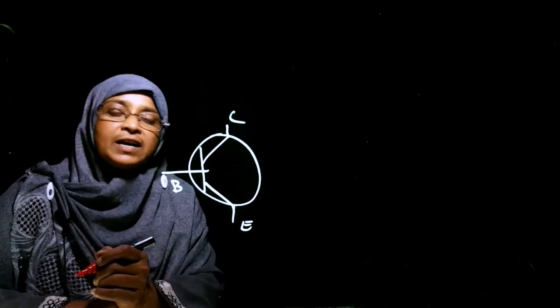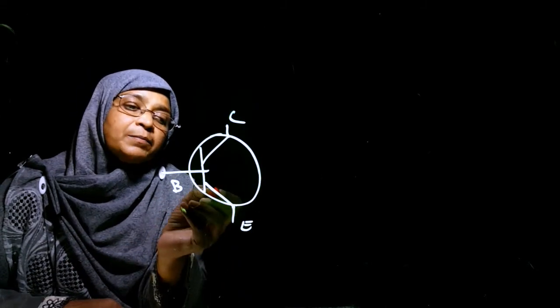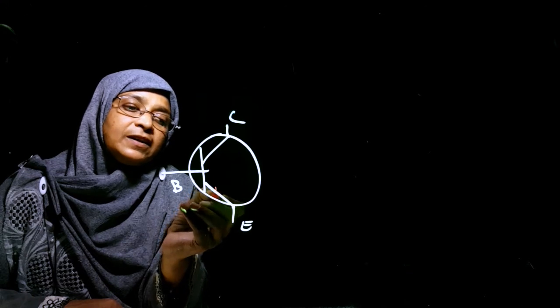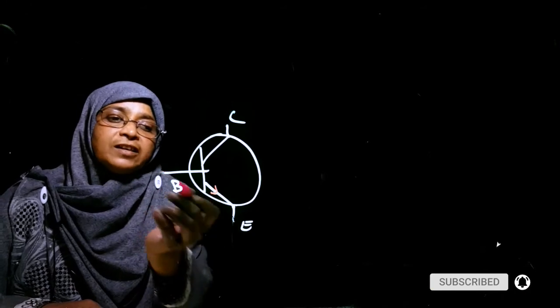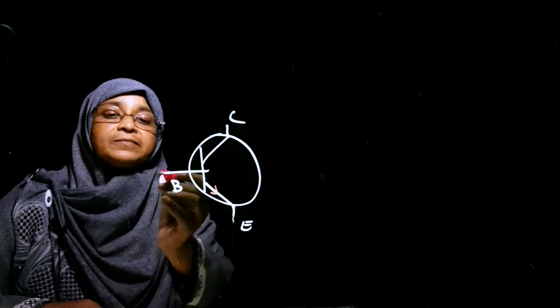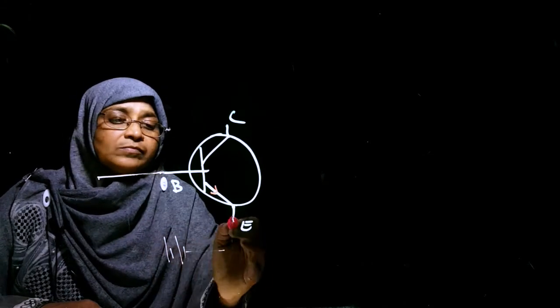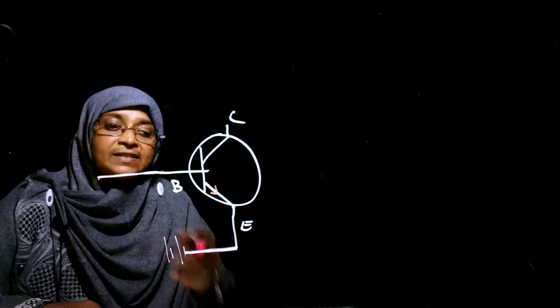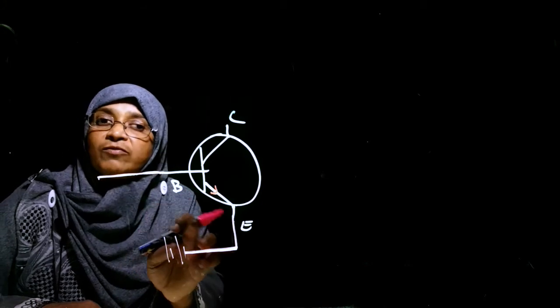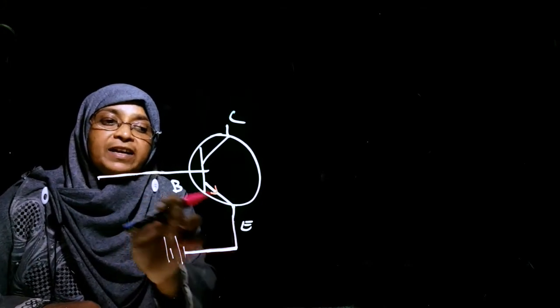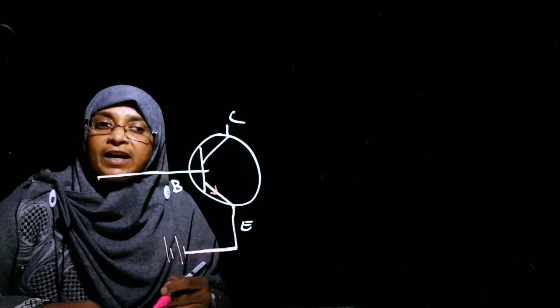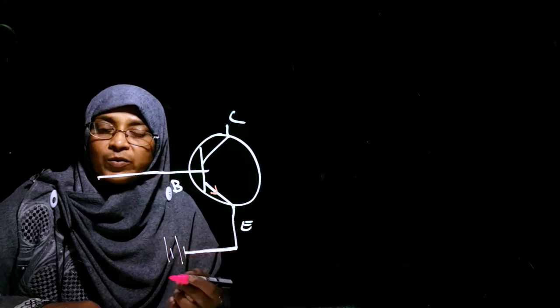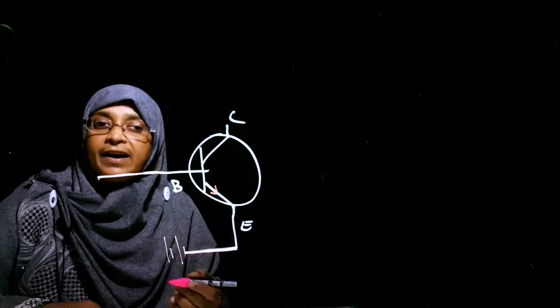We know the current flows from the base to emitter in this transistor. So, this junction, the base-emitter junction, should be forwardly biased. Forwardly biased and a small voltage should be supplied between these two. The voltage is controlled, voltage reduced using the high resistance.